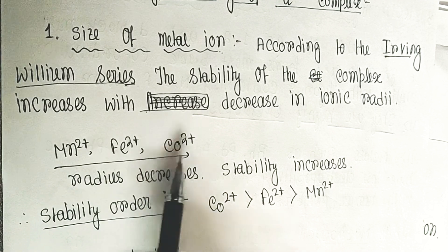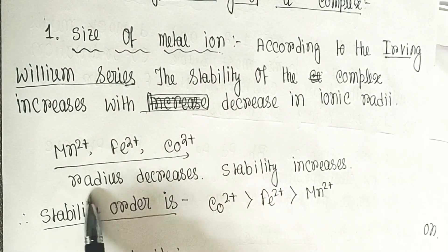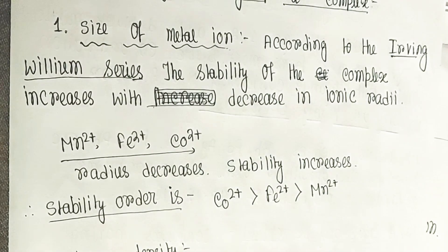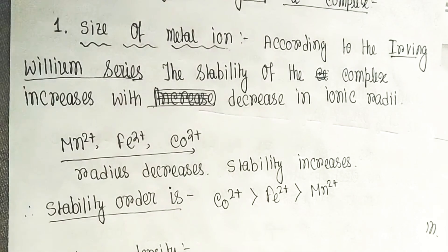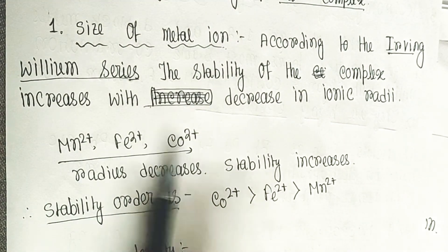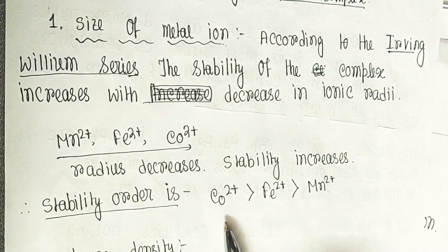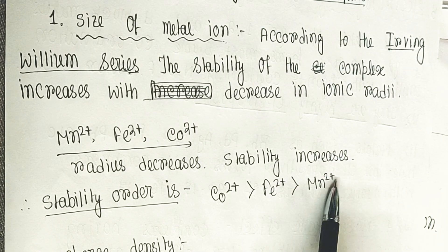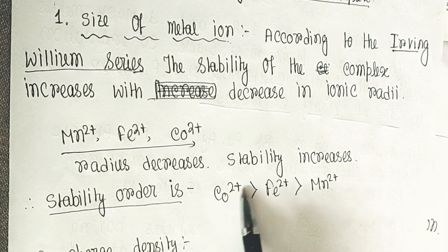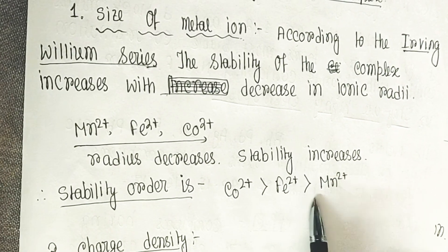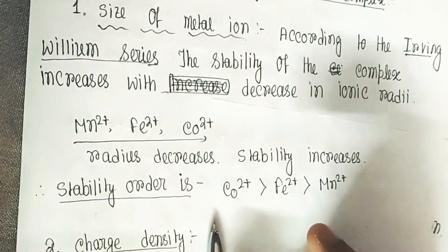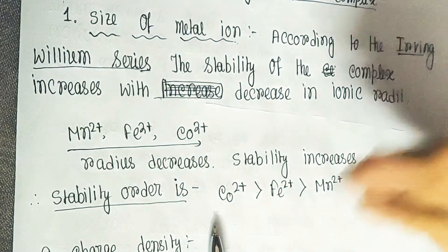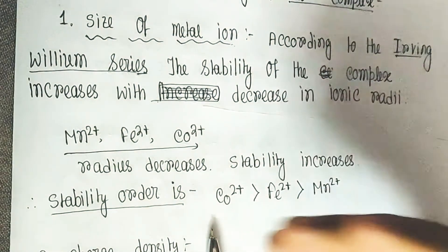As you move from left to right — manganese, iron, cobalt — the radius decreases and stability increases. The stability order is Co²⁺ > Fe²⁺ > Mn²⁺. Co²⁺ is smaller than Mn²⁺, so Co²⁺ is more stable. Since all three ions have a +2 charge, the charge is constant. Co²⁺ has the smallest radius, so its charge density is maximum, giving the highest stability.